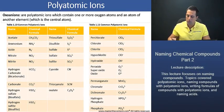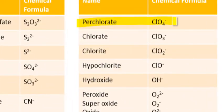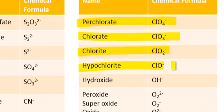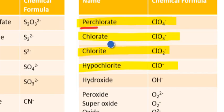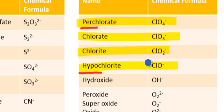Furthermore, when we have more than two oxal anions in a series — as we see here for perchlorate, chlorate, chlorite, and hypochlorite — the prefix 'per', meaning 'more than', is given to the polyatomic ion that has one more oxygen than the polyatomic ion that ended in ATE. Furthermore, the 'hypo' prefix, meaning 'less than', is going to be given to the polyatomic ion that has one less oxygen than the polyatomic ion with the ITE ending.